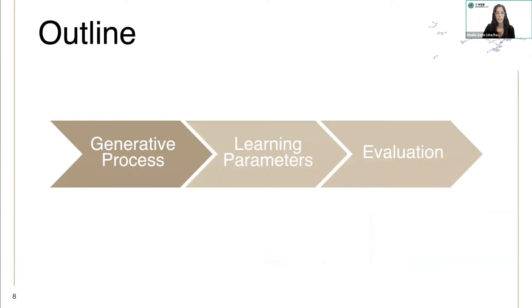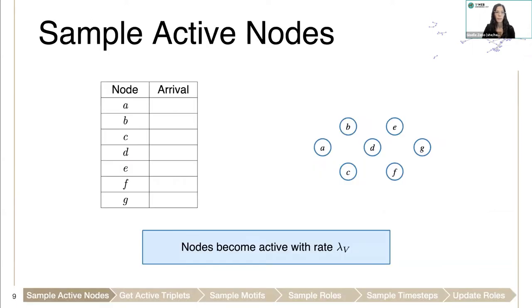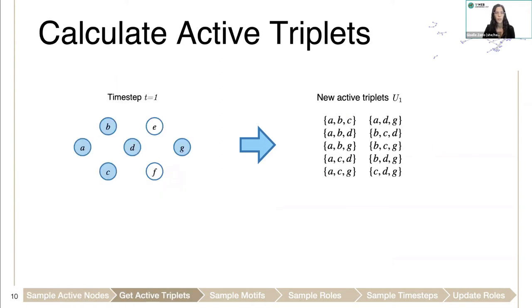In the generative process of our model, we first sample the active nodes. We get their arrival times from their arrival rate lambda v. And then in time step one, the new nodes are the active nodes. Then using the active nodes, we can determine the triplets that we can use to sample the motifs.